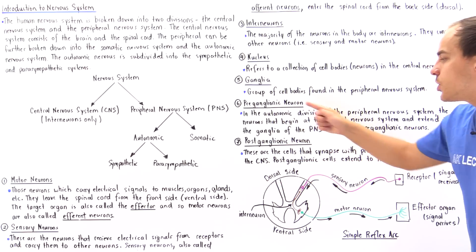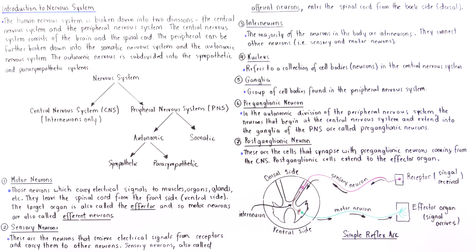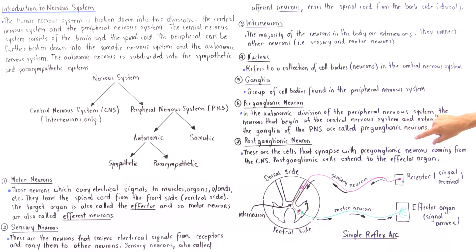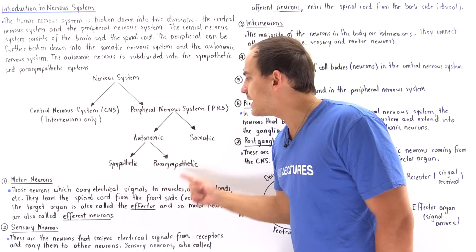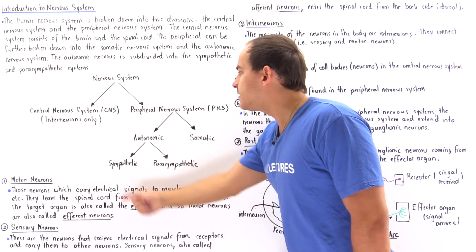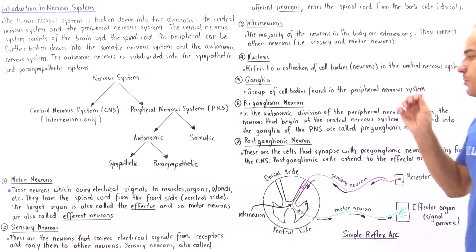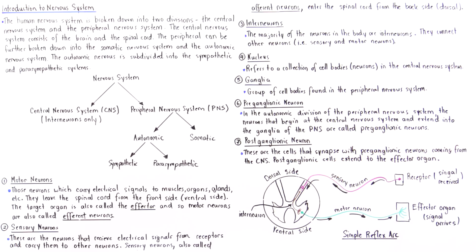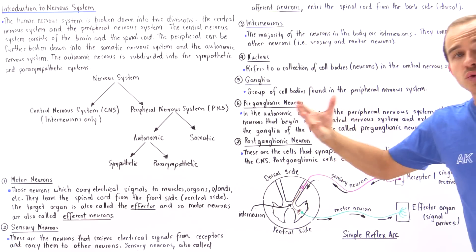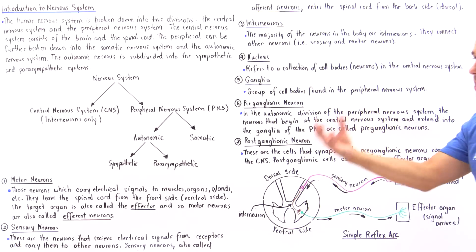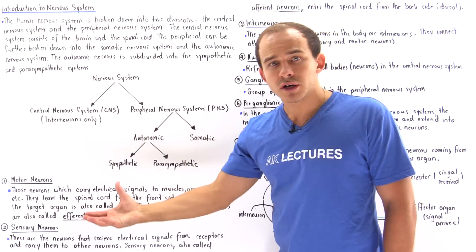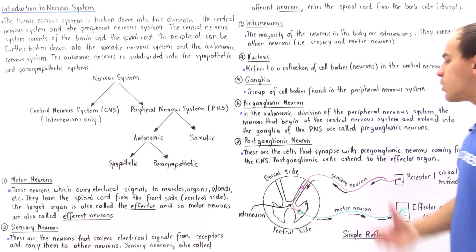Post-ganglionic neurons are the cells that synapse or connect with the pre-ganglionic neurons coming from the central nervous system, and this takes place within the autonomic division of the peripheral nervous system. Post-ganglionic cells carry those electric signals and extend to the effector organ, whatever it might be — a muscle, some type of organ, a tissue, and so forth.